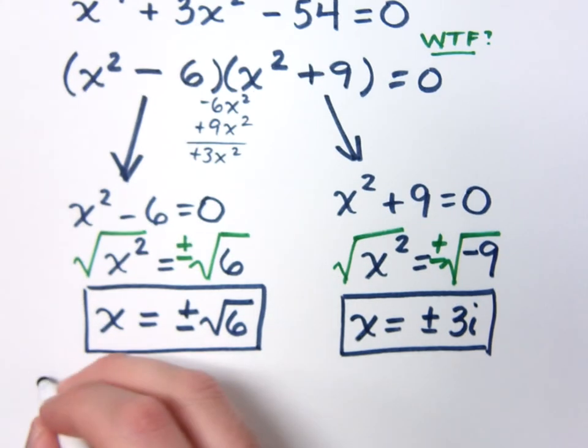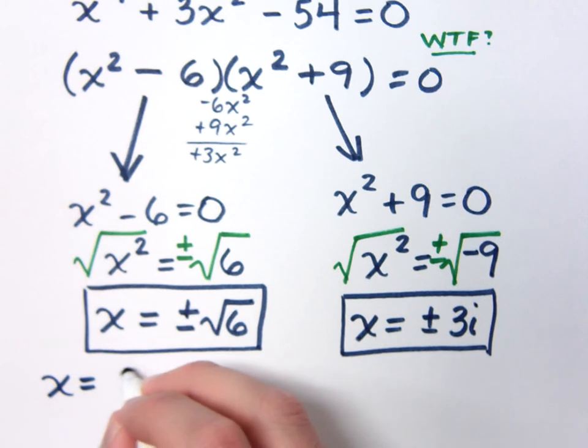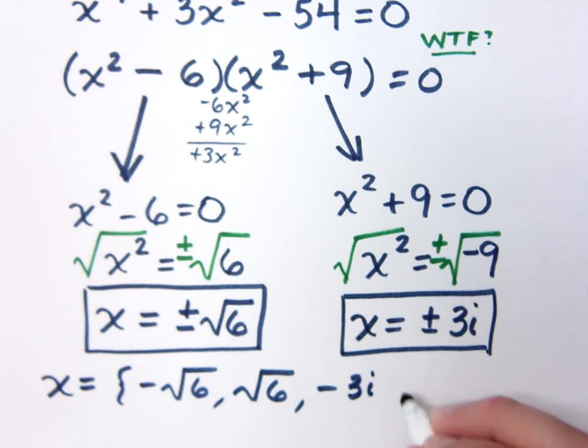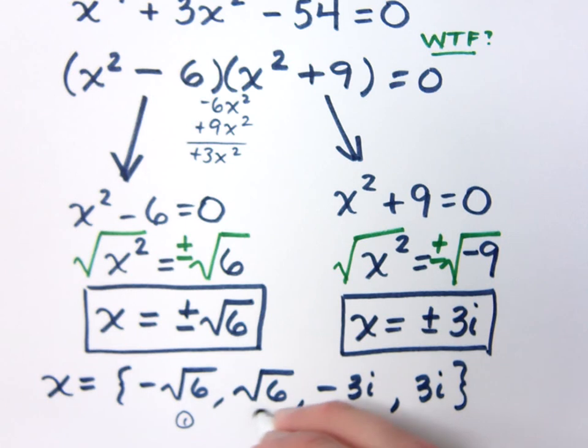Now, like in the last problem, I can just write out all of my answers and list them. I've got negative square root of six. Positive square root of six. Negative three i. Positive three i. So you see you've got one, two, three, and you've got four solutions there.